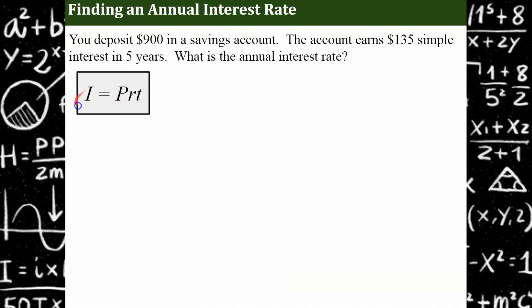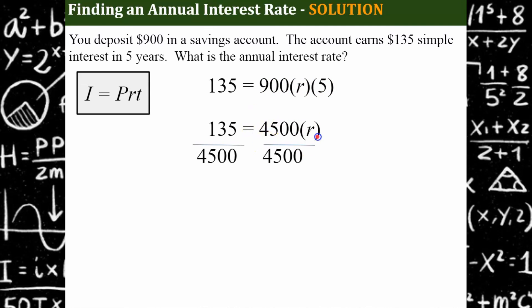Now let's talk about using this formula to find something else. We're going to now look to find the rate. So we know that we've deposited $900 into a savings account, and we earned $135 in interest over five years. And we now want to know what was the rate that the bank gave us. So we're going to replace interest with $135. Our principal was $900. We don't know the rate, and we know that our time was five years. So we're going to multiply first 900 times five, and then we're going to divide both sides by 4,500 to solve for R.